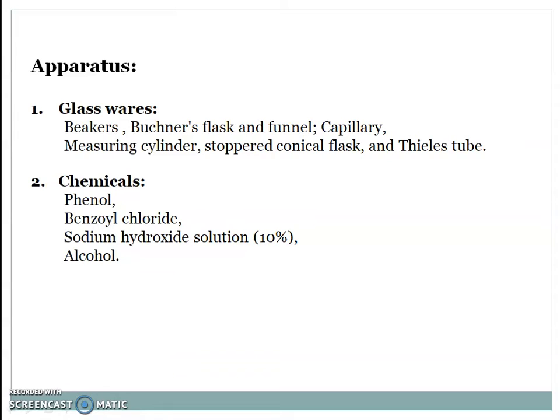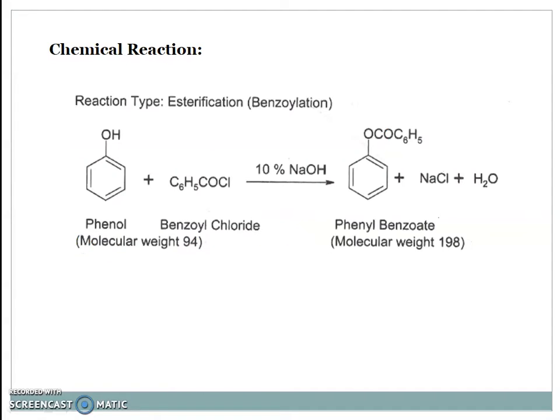Apparatus and glassware: beaker, Buchner flask and funnel, capillary, measuring cylinder, stoppered conical flask, and test tube. And the chemicals are phenol, benzoyl chloride, sodium hydroxide solution 10%, and alcohol.